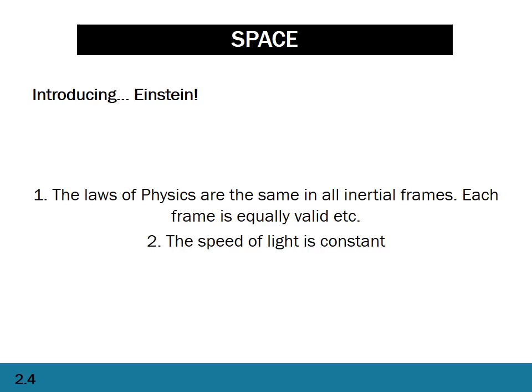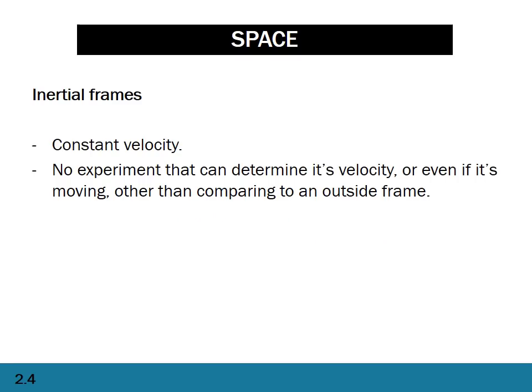Then Einstein comes along and formulates his two principles of special relativity. First, that the laws of physics are the same in all inertial frames, and each frame is equally valid. Second, that the speed of light is constant. An inertial frame is any frame moving at constant velocity — within that frame there's no experiment that can determine the velocity of the frame or even whether it's moving at all, unless you compare it to some outside frame.